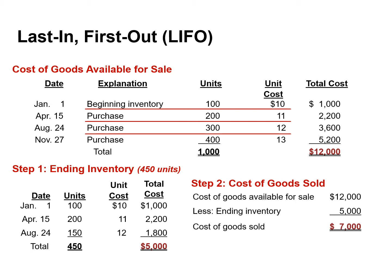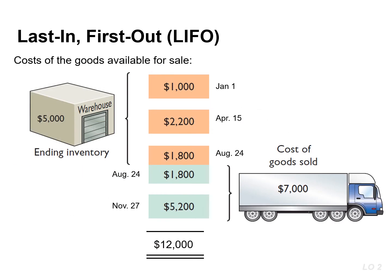We calculate the cost of goods sold by subtracting ending inventory from the cost of goods available for sale. The cost of goods available for sale was $12,000, and we assigned $5,000 to ending inventory, which means our cost of goods sold is $7,000. We can also calculate cost of goods sold by pricing the 550 units sold using the prices of the last units acquired. Of the 300 units purchased on August 24th, only 150 units are assumed sold; the other 150 units were assumed unsold and included in ending inventory.